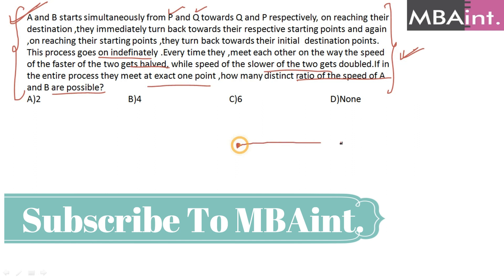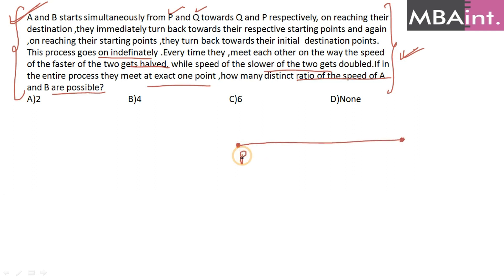You have destinations P and Q. This is, let's say, P and this is Q. A is starting from here and B is starting from here. Now they are saying that every time they meet exactly at one point. Let's say this is the point they are meeting.